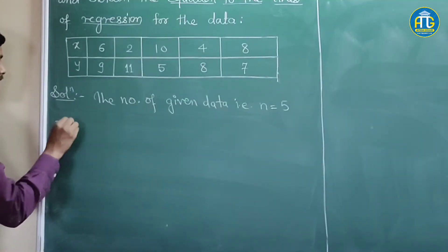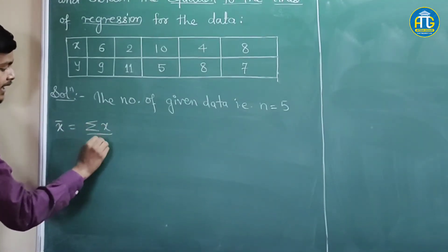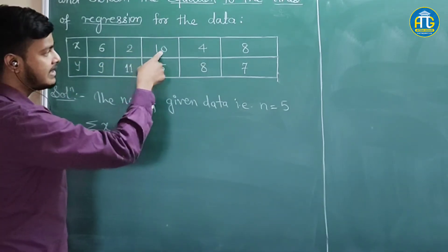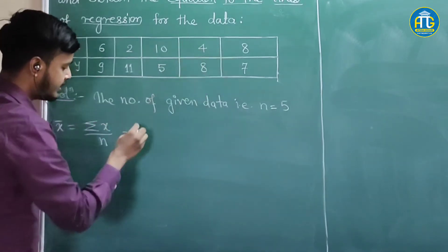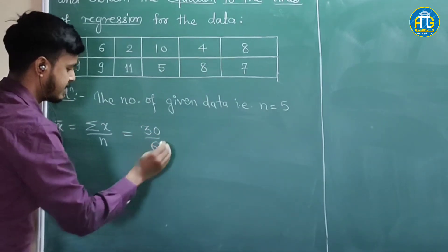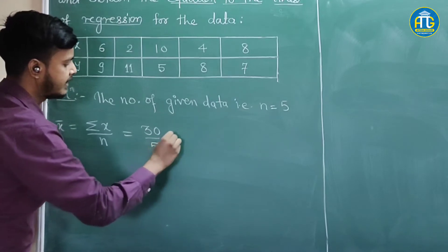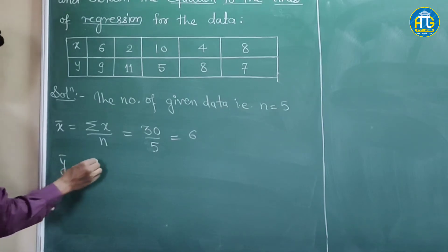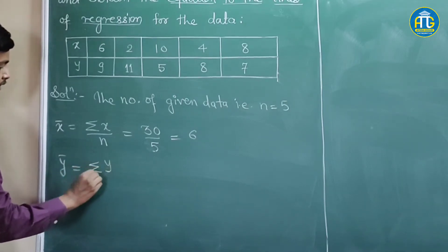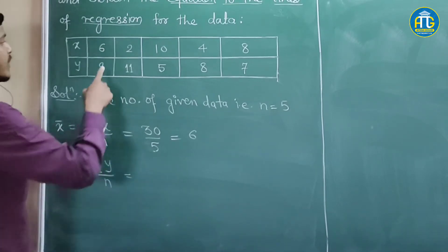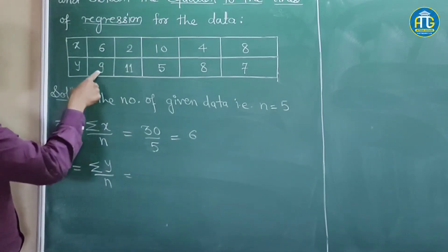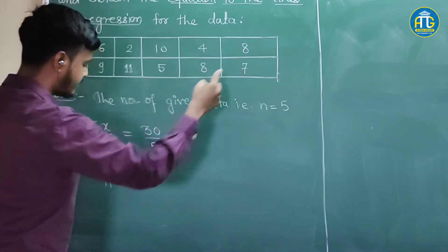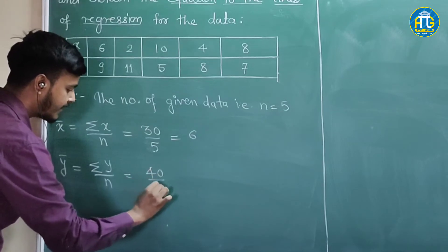x̄ is equal to summation x by n. So: 6 plus 2 is 8, then 18, then 22 is 30. So this is 30 by 5, that is 6. And likewise ȳ: sum all the values of y divided by n. That is 9, 11, 20, 20 plus 5 is 25, 10 plus 15 — so that is 40. So 40 by 5, that is 8.